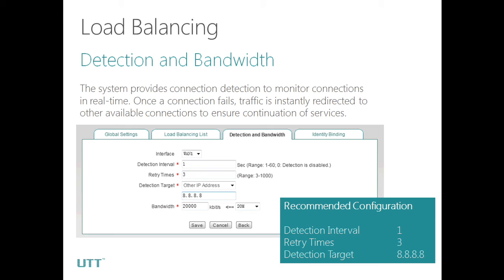We need to configure each WAN port one by one. The recommended configuration is as follows: detection interval 1, retry times 3. The detection target can be set to the default gateway or other IP addresses. It is recommended to set it to 8.8.8.8, which is the well-known Google DNS. Please also set the bandwidth of each WAN port according to your actual WAN bandwidth. The router will ping the detection target according to the detection interval and retry times.